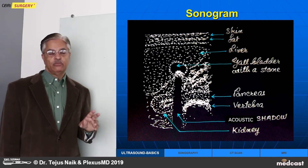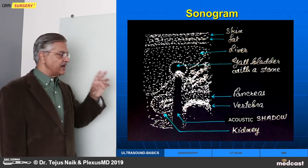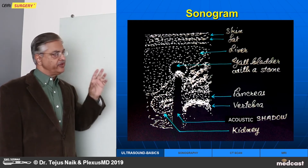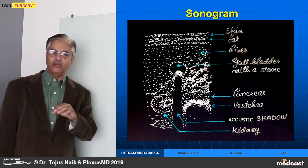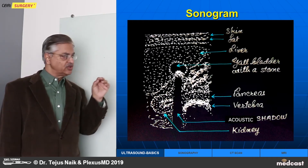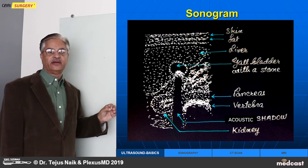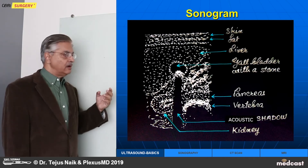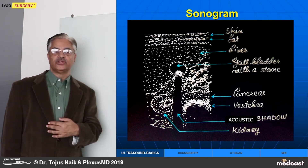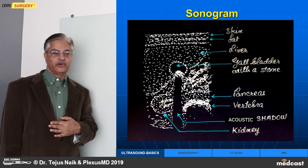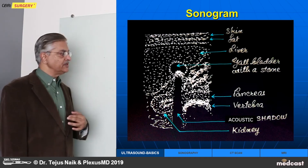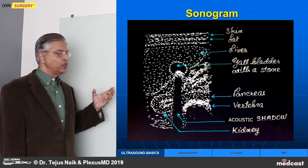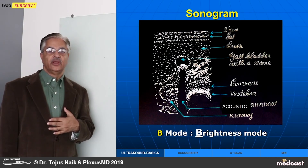So this is B-mode. I have tried to show the right hypochondrium with the abdominal wall, liver, and gallbladder. There is a stone in the gallbladder. Behind the gallbladder, we can see a kidney and the echoes from the vertebra. So this is B-mode — this is one picture of B-mode.